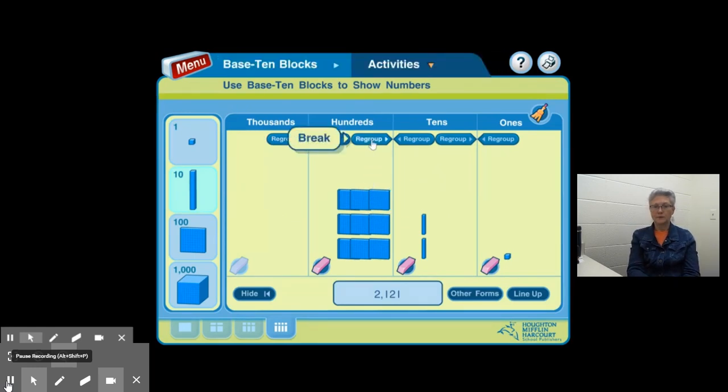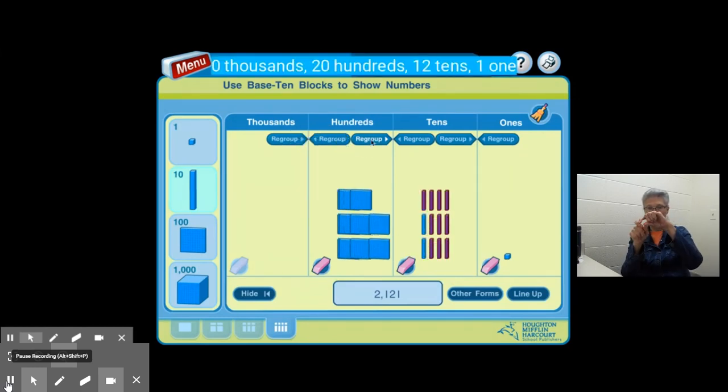We can also regroup hundreds into tens. I just took 100 and I regrouped it into 10 tens. So now we have 1 ten, 2 tens, 3 tens, 4 tens, 5 tens, 6 tens, 7 tens, 8 tens, 9 tens, 10 tens, which is the same thing as 100. Plus we have the two tens that were already in the tens place value.